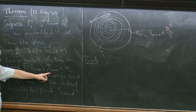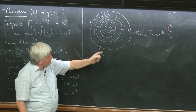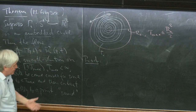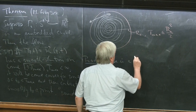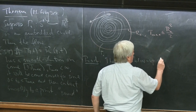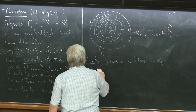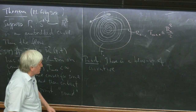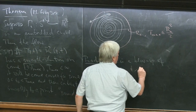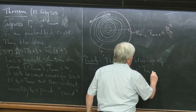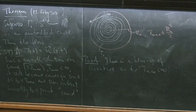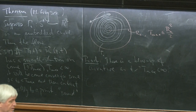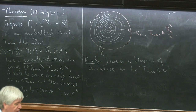With the technology built up since then — monotonicity formula, rescaling techniques — I want to show a slightly different approach. We know there is a blow-up of curvature as T approaches T_max, because T_max is finite since the curve is enclosed by the circle. Then we can use our rescaling procedure. There are only two possibilities: either it's type 1 or type 2.